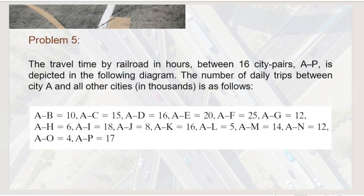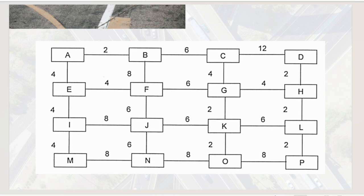The problem states that travel time by railroad in hours between 16 city pairs (A to P) is depicted in a network diagram. The number of daily trips between city A and all other cities in thousands is also given. From the diagram, you can see that from point A to point B is 2 hours, and from B to C is 6 hours. The network forms a grid from A to P.